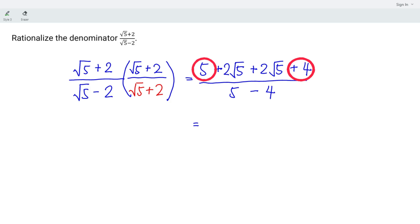We should have 5 plus 4 is 9. 2 root 5 plus 2 root 5, we have 4 root 5. And divided by 5 minus 4, which is 1. And this is simply equal to 9 plus 4 root 5.